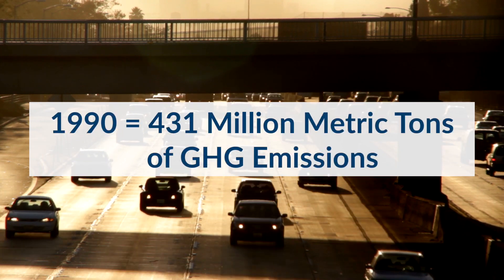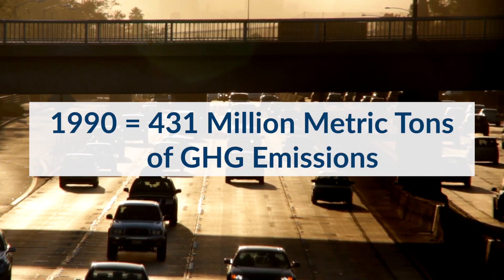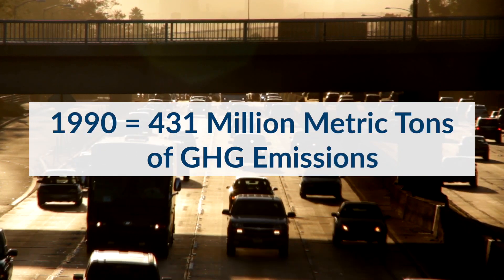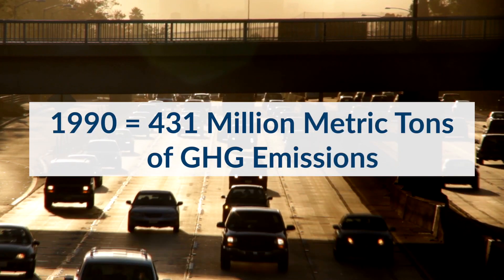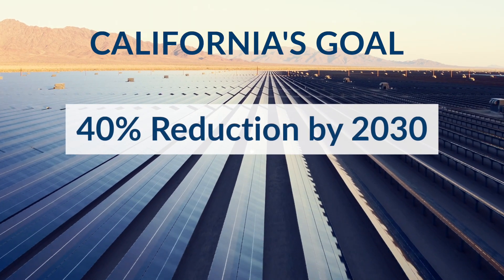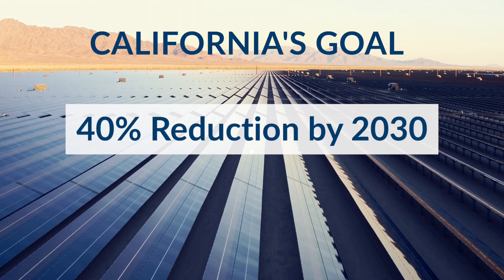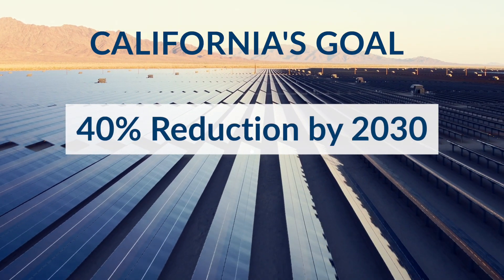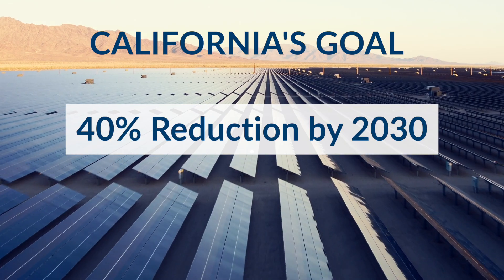California has a series of statewide programs in place to cut greenhouse gas emissions by at least 40% by 2030, with much deeper cuts in emissions by 2045.